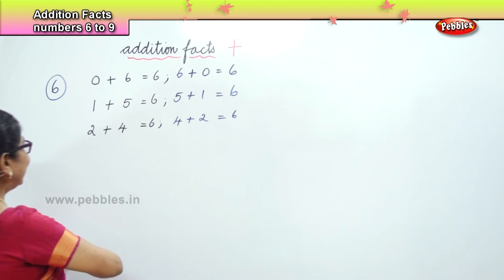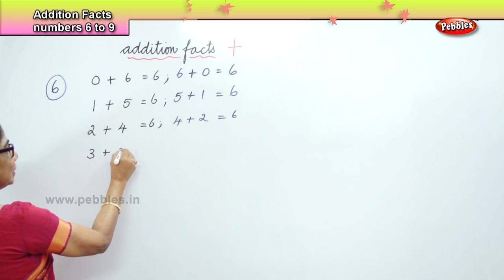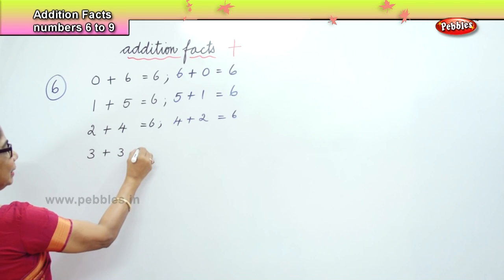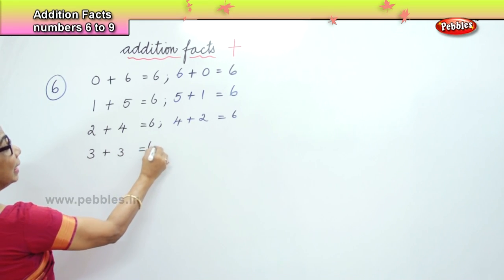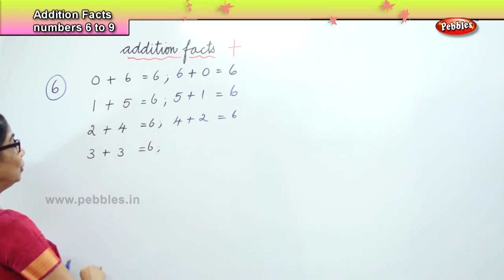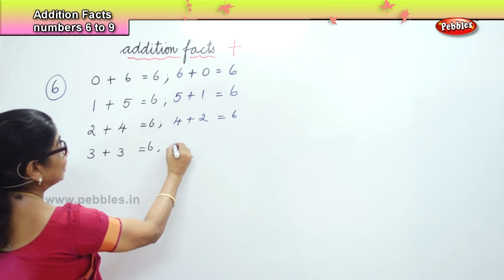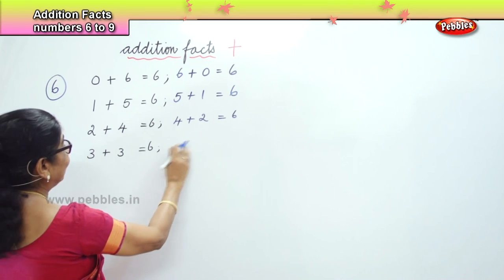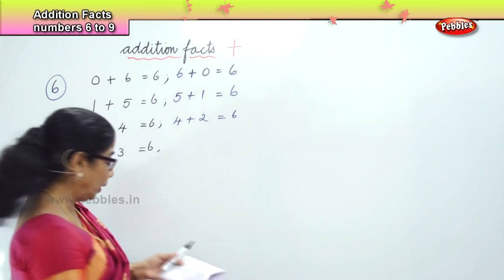Next we have 3. 3 plus 3 is equal to 6. And again, 3 plus 3 — both are the same — equals 6.